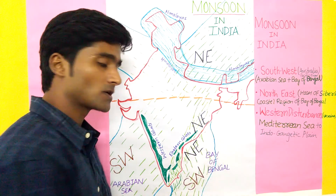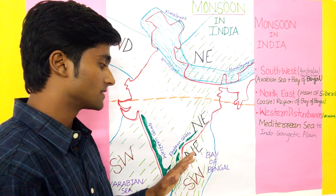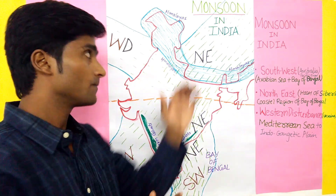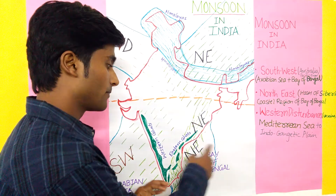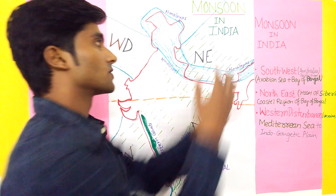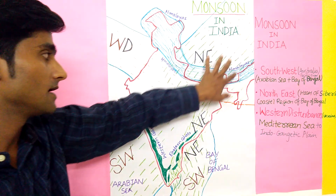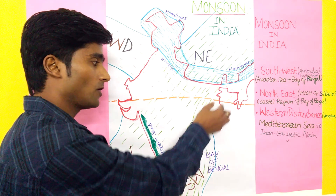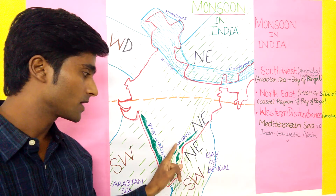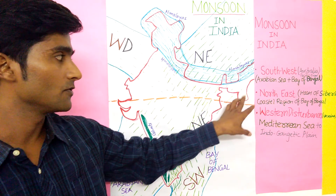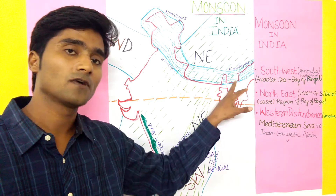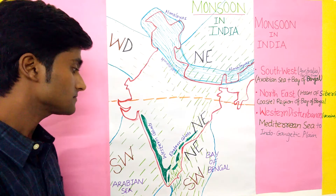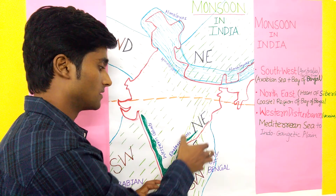In the Bay of Bengal there is a hot and humid climate during the months of October to December, creating low pressure there. So wind blows from the Northeast — from high pressure over Siberia to low pressure over the Bay of Bengal. This monsoon mainly gives rain to the coastal regions of the Bay of Bengal — Tamil Nadu, Andhra, and some parts of Odisha — as well as the Northeast region of India.